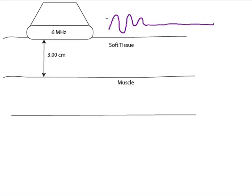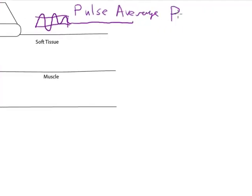The average intensity over this time that it's emitting the pulse is called the pulse average intensity. And that's abbreviated with the letters PA.